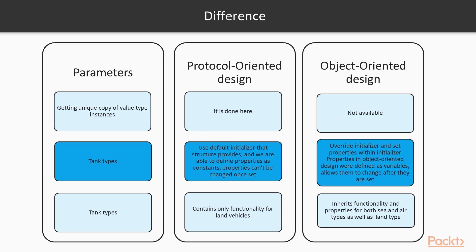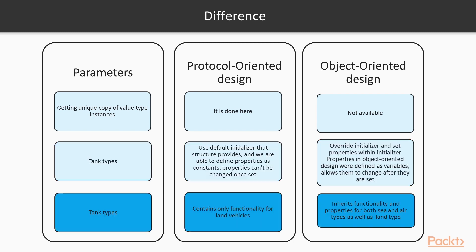Another difference is that the tank type designed in a protocol-oriented way can use the default initializer that the structure provides, and properties can be defined as constants that can't be changed once set. In the object-oriented tank type, we had to override the initializer and set properties within it, and those properties were defined as variables, which allows them to be changed after being set. The protocol-oriented tank type also contains only the functionality for land vehicles, whereas the object-oriented version inherits functionality for sea and air types even though it doesn't need it.